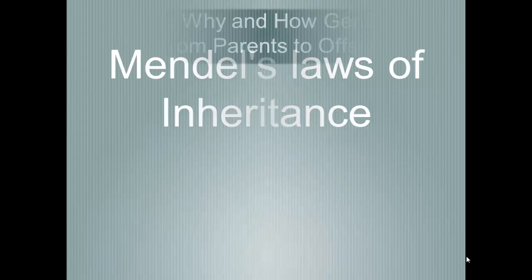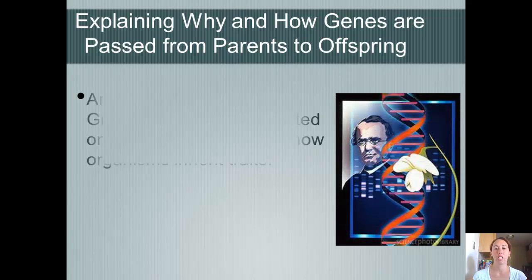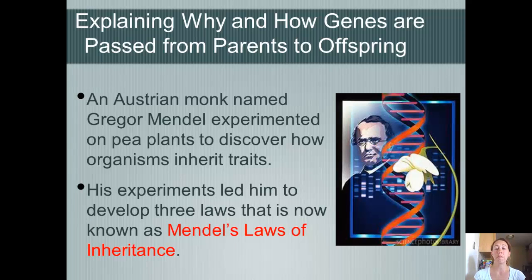Mendel's Laws of Inheritance. Mendel was an Austrian monk who experimented with pea plants to discover how organisms inherited traits. These experiments led him to develop three laws that are now known as Mendel's Laws of Inheritance, explaining why and how genes are passed from parents to offspring.